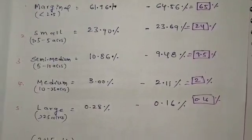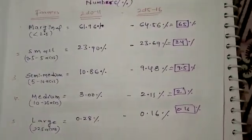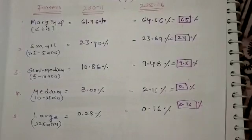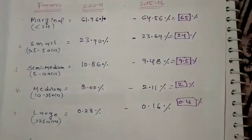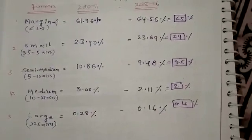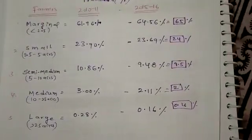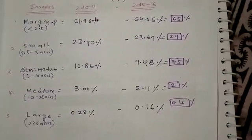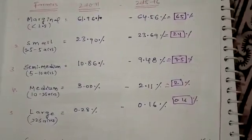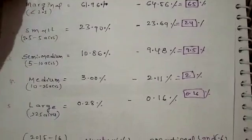Medium farmers hold 10 to 25 acres and large farmers hold more than 25 acres. In the Telangana region (2015-16 census): marginal farmers are 64.5% (approximately 65%), small farmers are 23.69% (approximately 24%), semi-medium are 9.48% (approximately 9.5%), medium are 2.11%, and large are 1.6% of farmers. In Telangana, 89% of people hold below 5 acres of land.